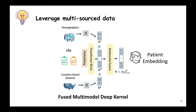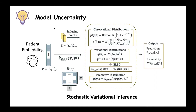First, we design different embedding frameworks for input data with different modalities. Then, to learn a shared representation of all the input data, we leverage a multi-modal fusion mechanism. On the other hand, in order to model the uncertainty along with the prediction labels, we introduce a stochastic variational inference model. The patient embedding vector v is first passed into our RBF kernel warping function, and then we use the variational inference module with inducing points as an approximate technique to deal with large-scale input data. In this way, we can get predictions along with the uncertainty score.